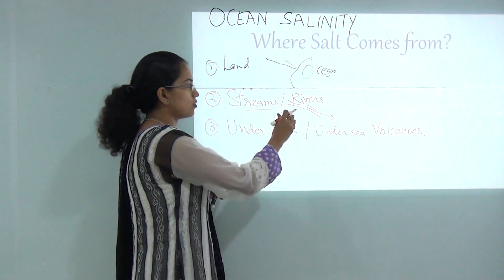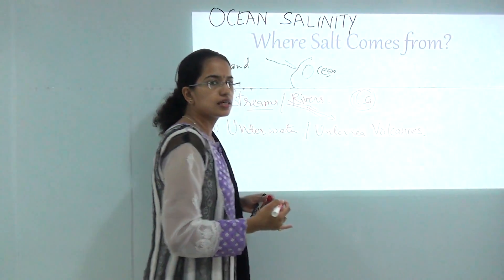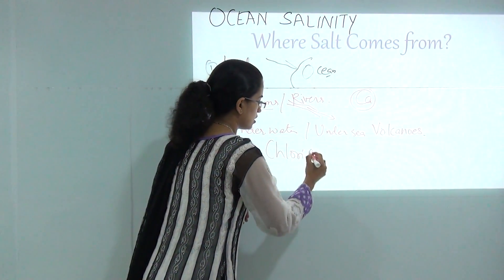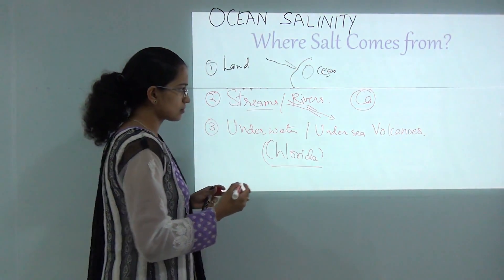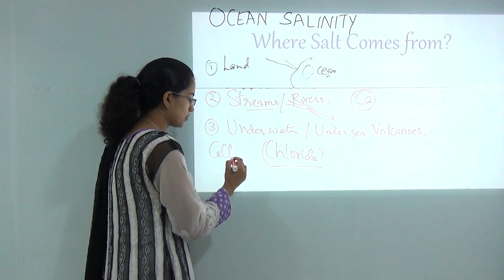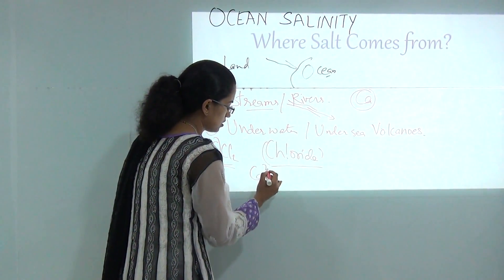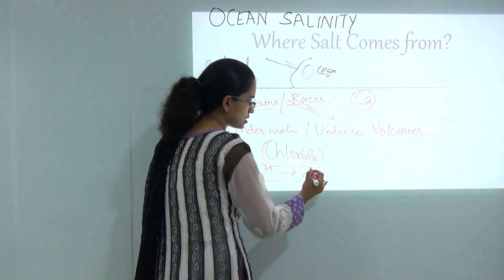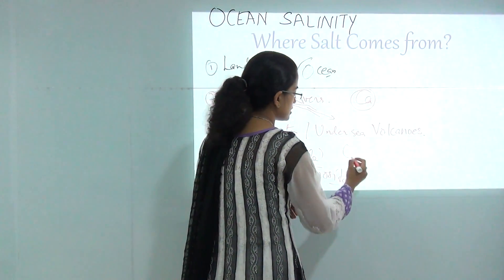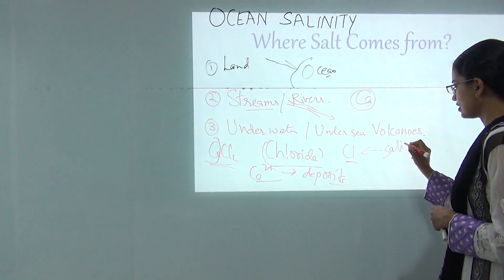Now there is a primary question to understand: the rivers that drain into the ocean bring a lot of calcium, but the ocean bodies have a lot of chloride. How does this happen? The rivers and streams when they flow into the ocean body bring in calcium chloride. This calcium separates out and is found in deposits in mollusks or diatoms, and the chloride is left behind.